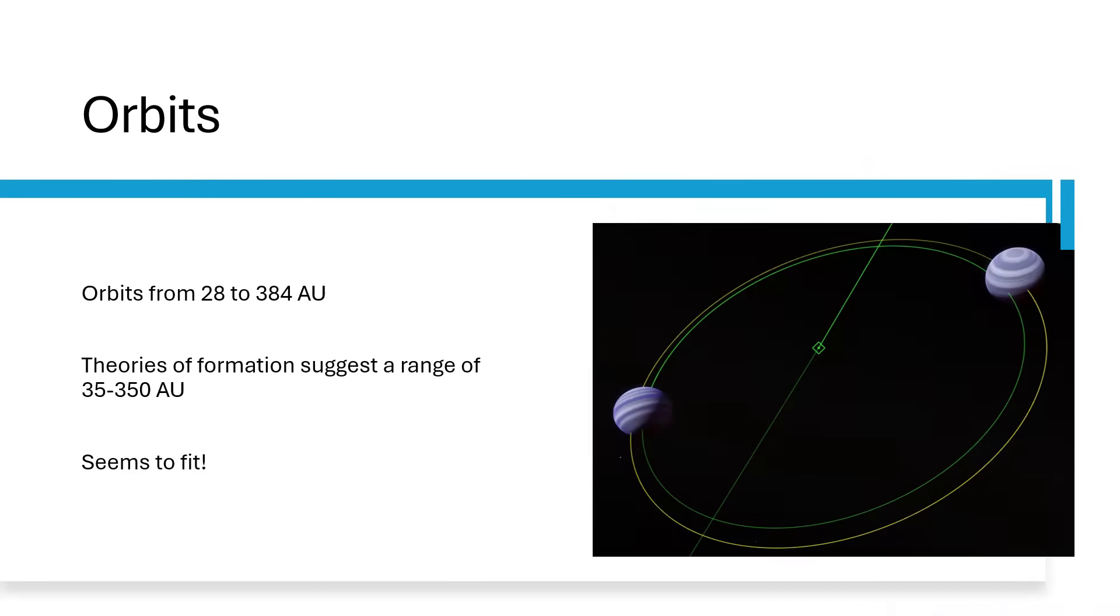From what we found, the separation between the binaries is anything from about 28 to 384 AU astronomical units. Neptune is 30 AU from the sun. So this is from the orbit of Neptune out to 10 or 15 times that. And that actually fits with some of the theory.